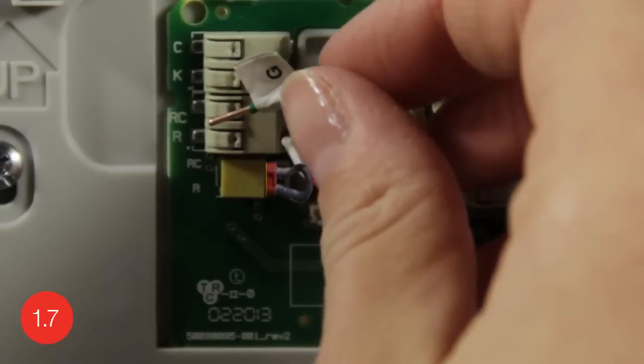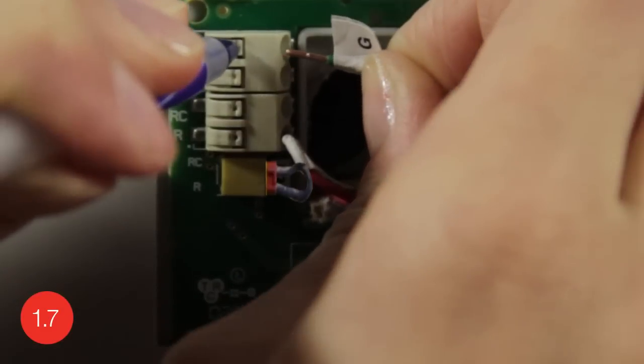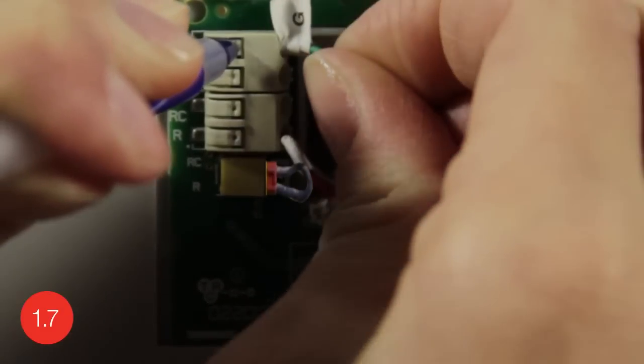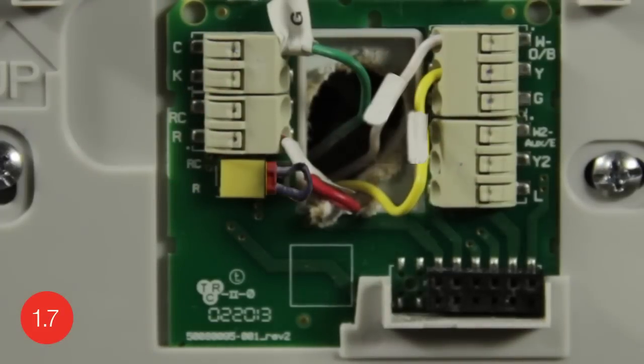Instead, insert the G wire into the C terminal on your wall plate. Please note that you will lose your ability to turn your system fan on by doing this, but that's okay because you have a gas, oil, or propane heating and cooling system, which will control the fan when the system is running.